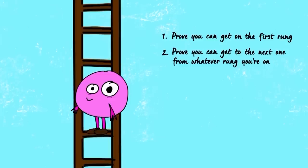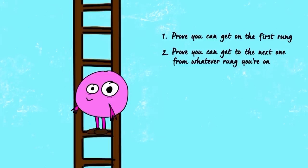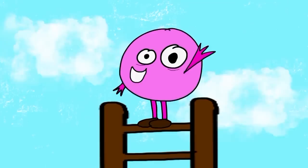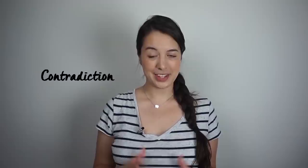One, prove you can get on the first rung. And two, prove that you can get to the next one from whatever rung you're on. Then it follows that if your proof holds for any step n, it'll hold for any step n plus one. So no matter where the top is, you'll eventually get there.